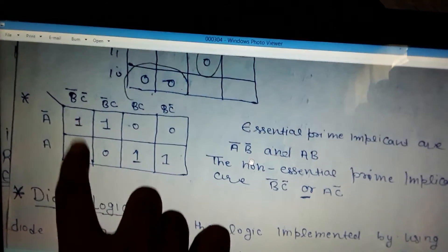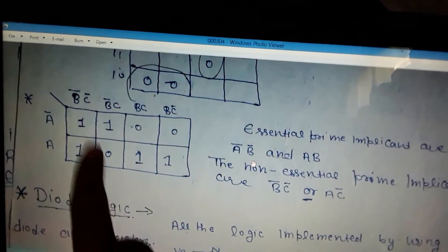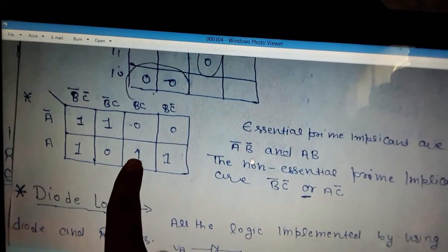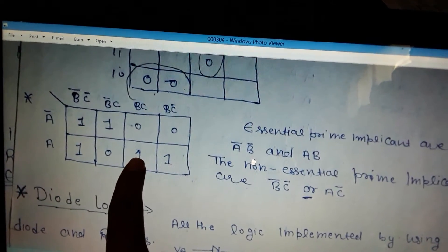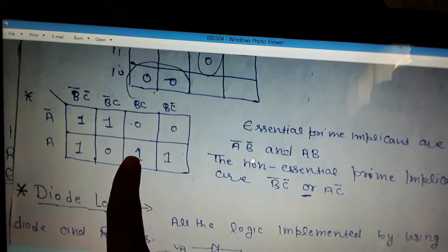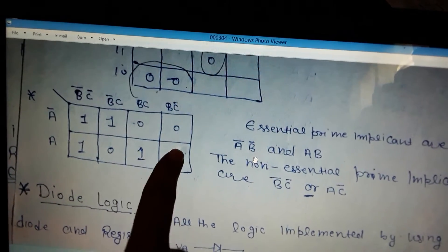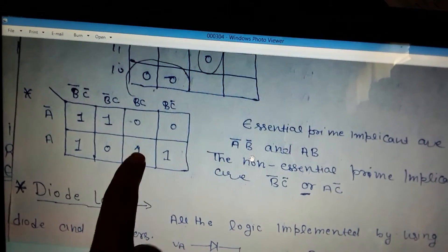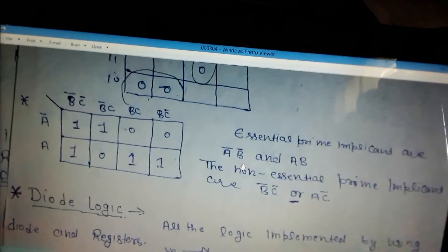Here, another one - look at this one. This one has to be included because there is no option, so this term will also be an essential prime implicant. So this is all about essential prime implicants.